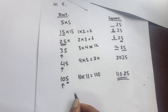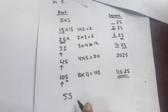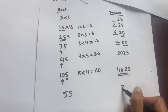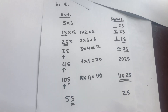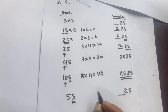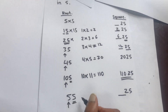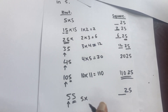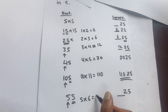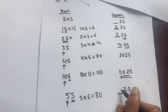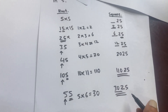For example, the last example is 55. If you find the square of 55, the last two digits are 25 because it ends with 5. The digit before 5 is 5. Multiply 5 by one greater than 5, which is 6: 5 into 6 equals 30. So 55 squared is 3025.